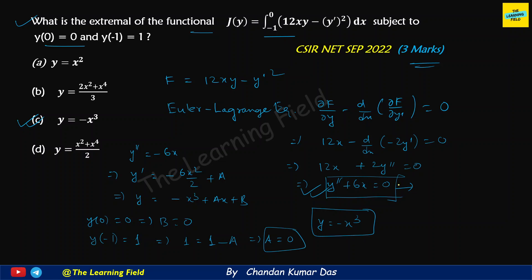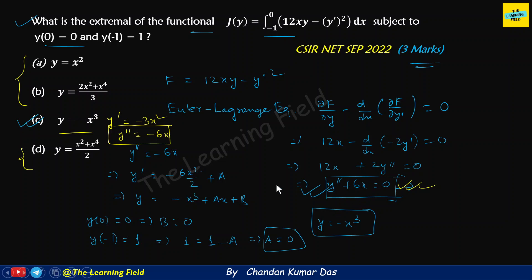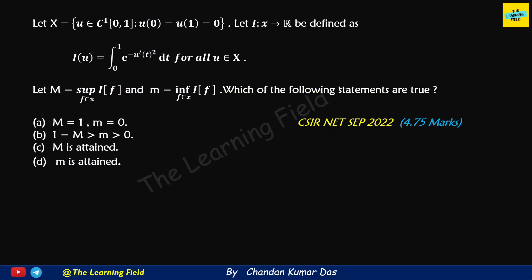We can also verify by checking option C directly: y-dash equals minus 3x-squared and y-double-dash equals minus 6x, which satisfies our equation. This allows us to discard the remaining three options. So option C is correct. Now moving to the next question, which is of 4.75 marks.